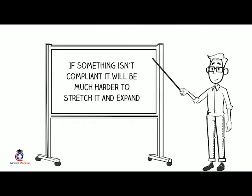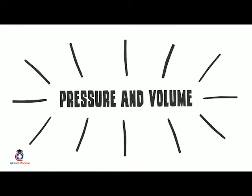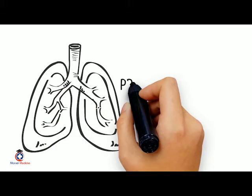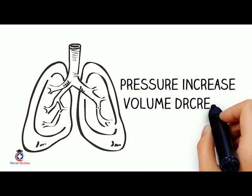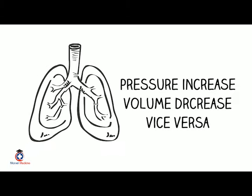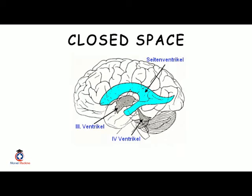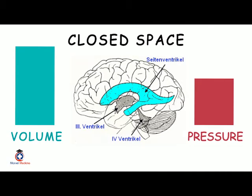Next, consider the relationship between pressure and volume. In intrapleural spaces and the lungs, as pressure increases, volume decreases. However, in a closed space like a ventricle, if you increase volume, pressure increases too — because of liquid in a confined space.